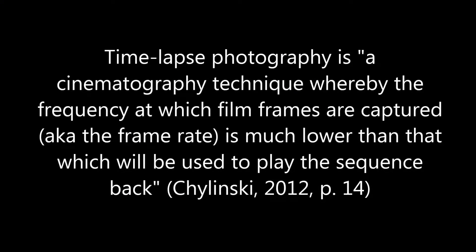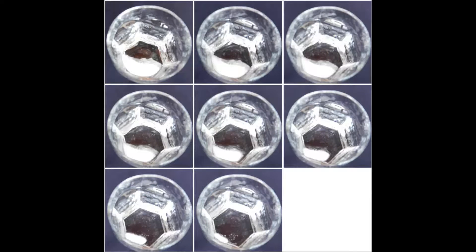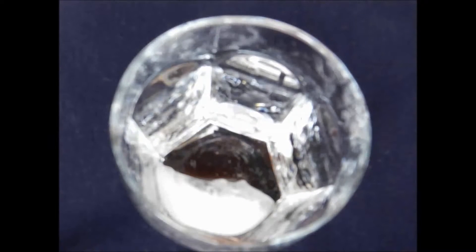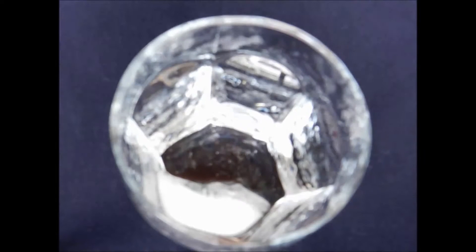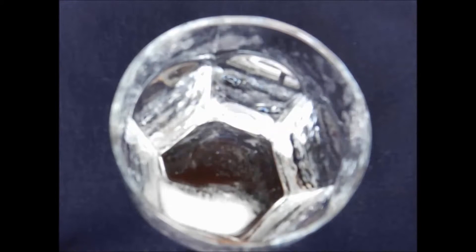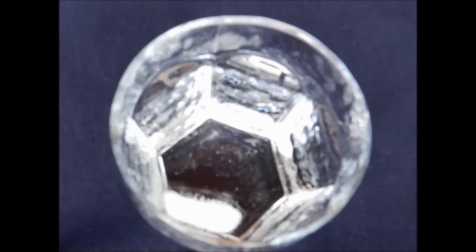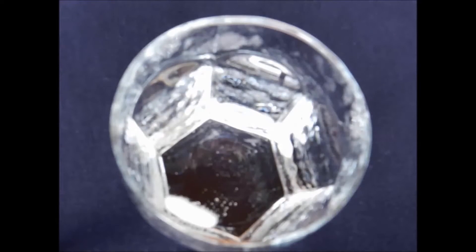Shelinski defines time-lapse photography as a cinematography technique whereby the frequency at which film frames are captured — a.k.a. the frame rate — is much lower than that which will be used to play the sequence back. The technique involves taking multiples of photos of a subject that changes imperceptibly slowly over a period of time and then assembling them in sequence to create a video that shows the transformation of the subject at what appears to be a high speed. A subject may be recorded at one frame per second, for example, and then the frames are played back at 24 frames per second, resulting in a 24 times increase in speed.